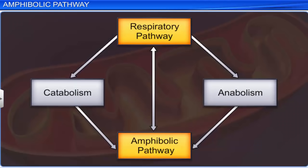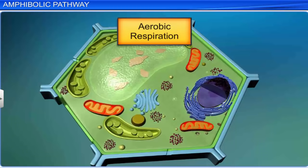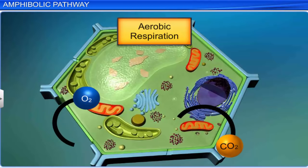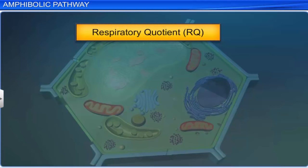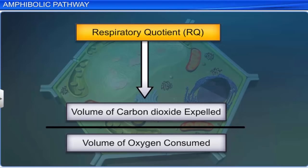Thus, the respiratory pathway is involved in both catabolism and anabolism, and is called an amphibolic pathway. As we know, aerobic respiration involves the consumption of oxygen and expulsion of carbon dioxide. The respiratory quotient RQ, or respiratory ratio, is calculated based on the volume of carbon dioxide expelled to the volume of oxygen consumed.